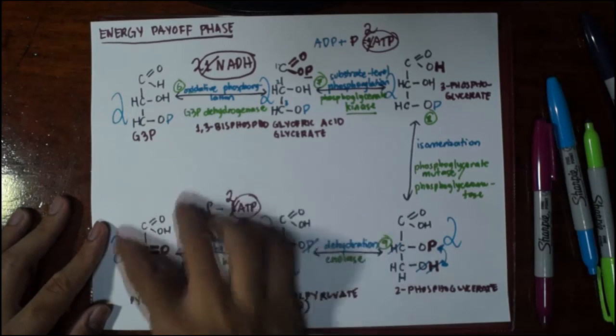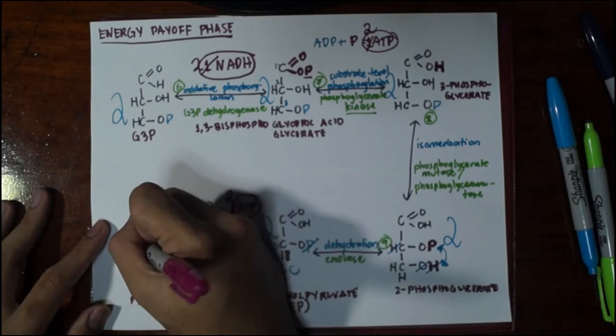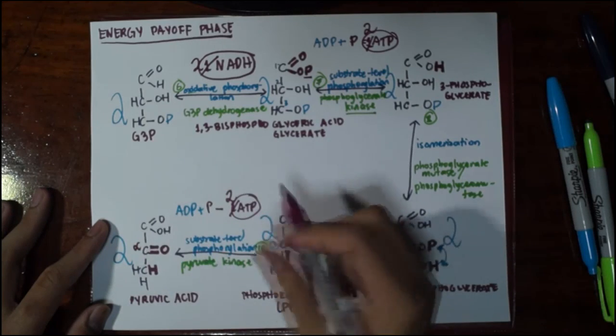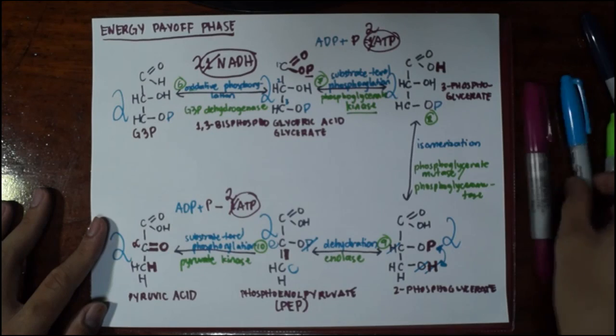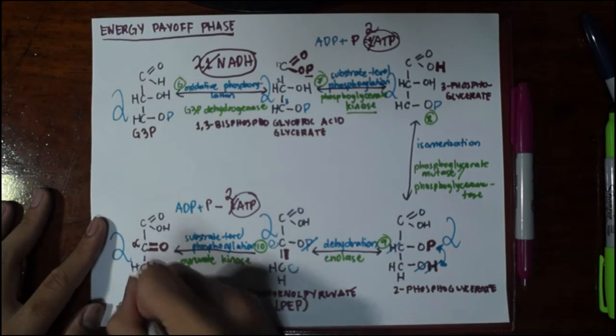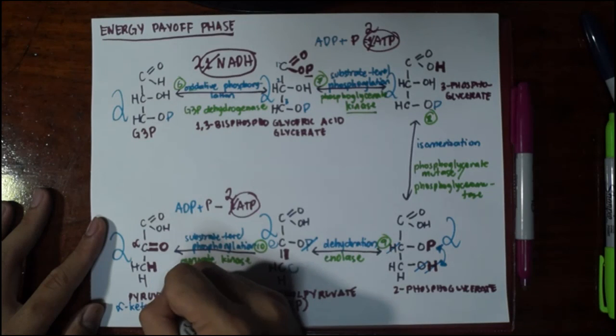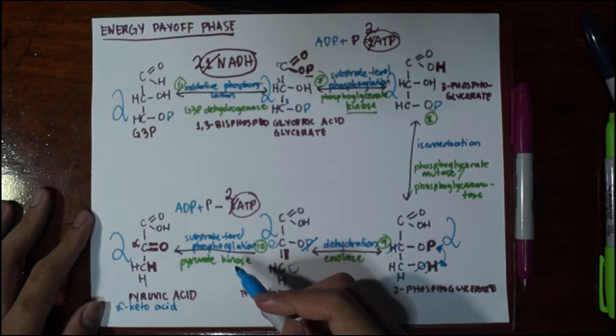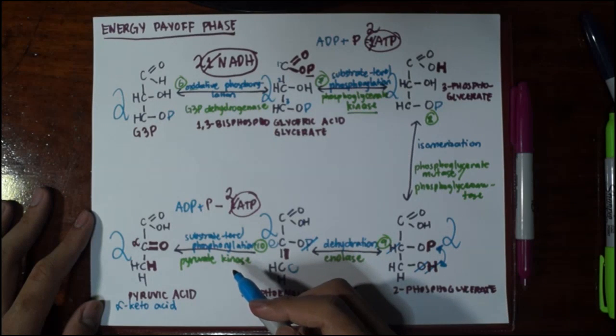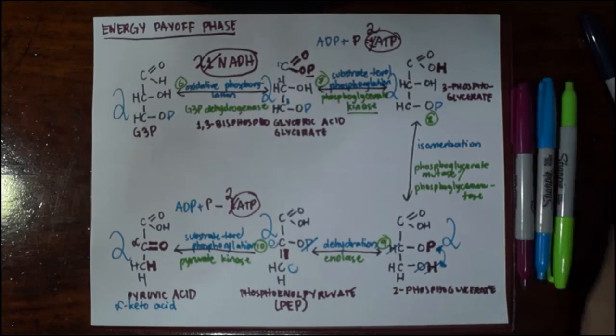And finally, we have pyruvic acid, which is also what we know as an alpha-keto acid. This is the carbonyl carbon. This is the alpha carbon. So this one is also known as an alpha-keto acid. And after pyruvic acid, you are now ready to know whether you are going anaerobic or aerobic. And that's glycolysis for you.